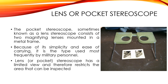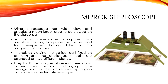The lens pocket stereoscope has magnifying lenses mounted in a metal frame. Because of its simplicity and ease of carrying, it is the type used most frequently by military personnel. However, the lens stereoscope has a limited field of view and therefore restricts the area that can be inspected.